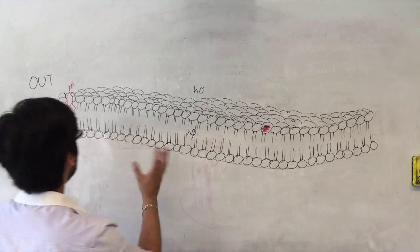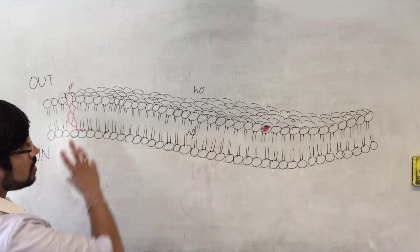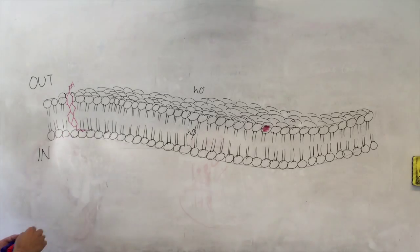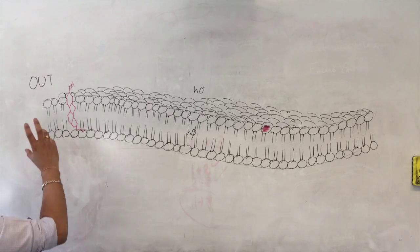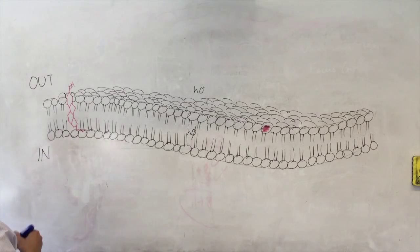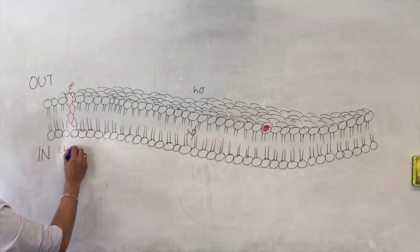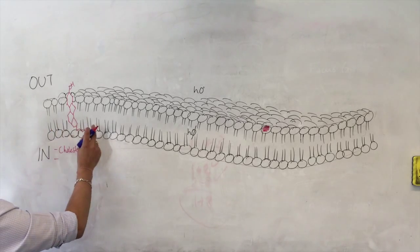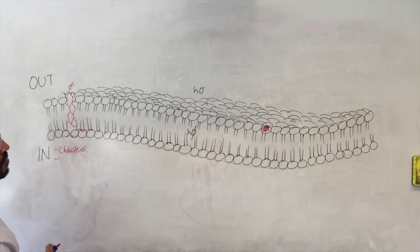Our first important additional structure in the membrane is a related member of the lipid family, cholesterol. Now cholesterol, as you can see, has got a very different structure to phospholipids.